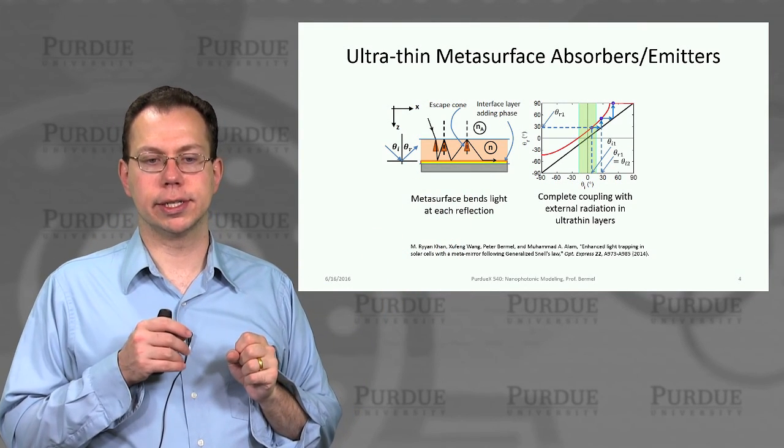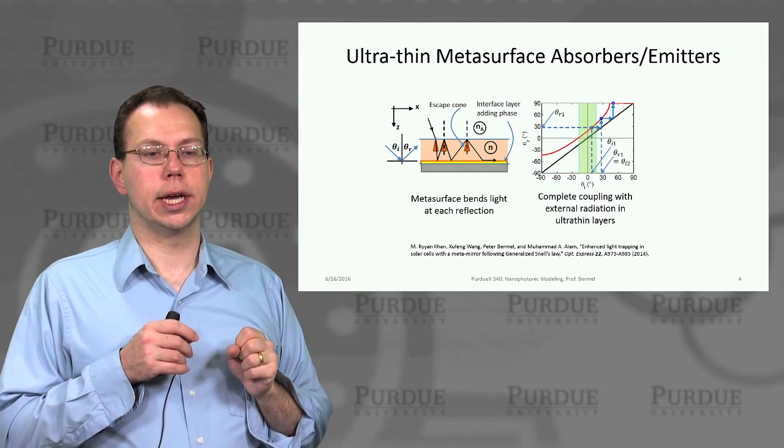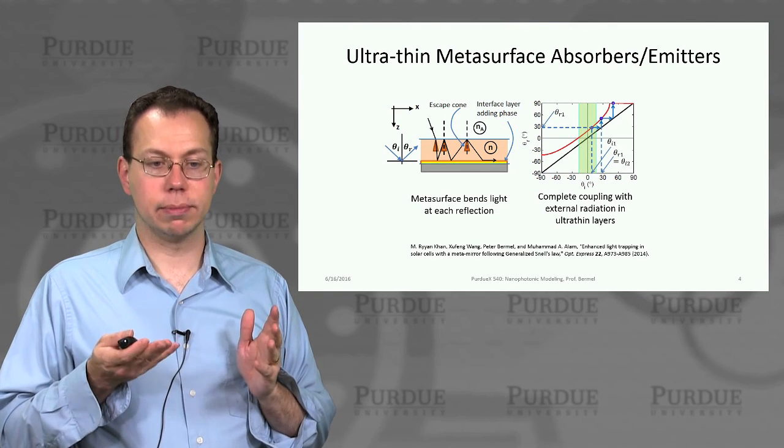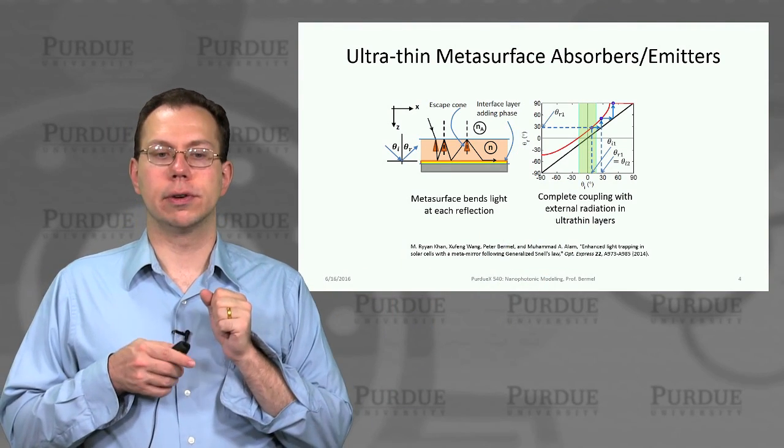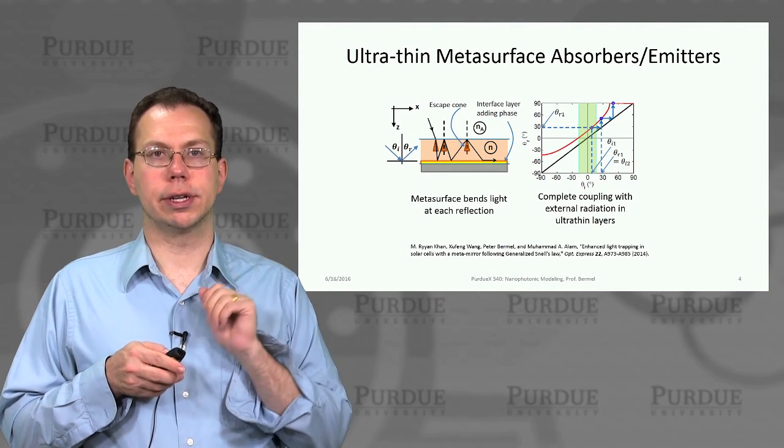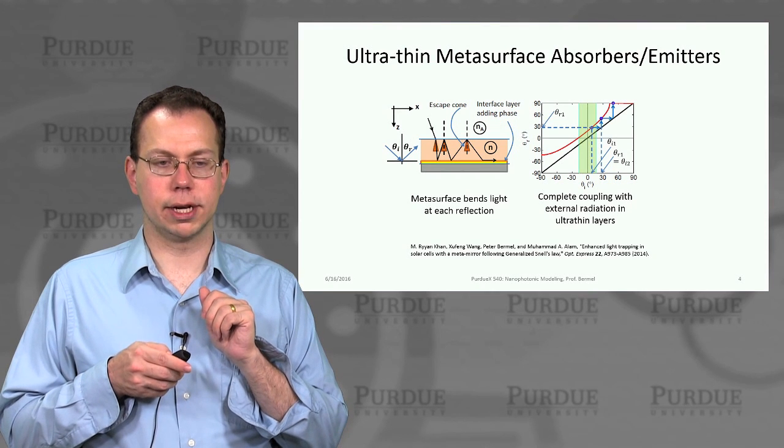the metasurface would actually push it away from the escape cone. And once you do that, it forces it to be internally reflected. So it can be fully absorbed in principle. In other words, complete coupling of the external radiation, even if you have an ultra-thin absorber layer because of this effect.